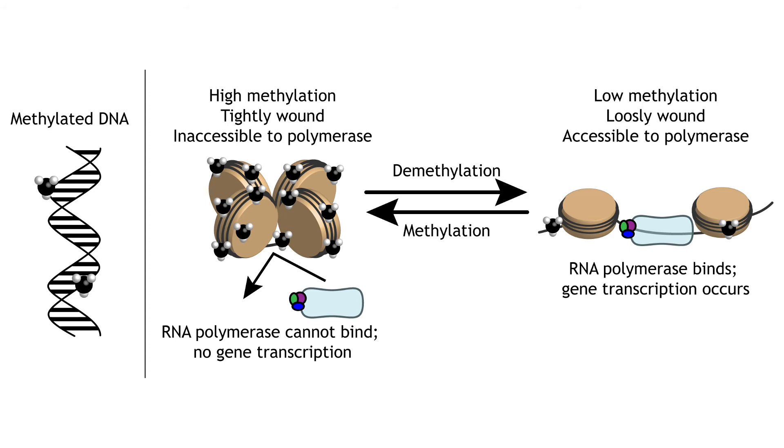Methyl groups make it more difficult for the polymerase to access the DNA by keeping the DNA coiled around the histones, reducing transcription.